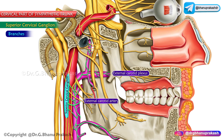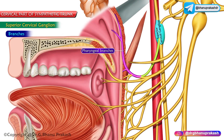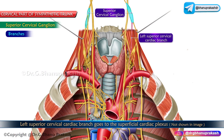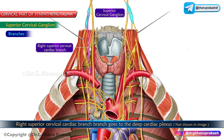Some fibers from the external carotid plexus form the sympathetic roots of the otic and submandibular ganglia. The pharyngeal branches from the superior cervical ganglion take part in the formation of the pharyngeal plexus. The left superior cervical cardiac branch goes to the superior cardiac plexus, while the right one goes to the deep cardiac plexus.